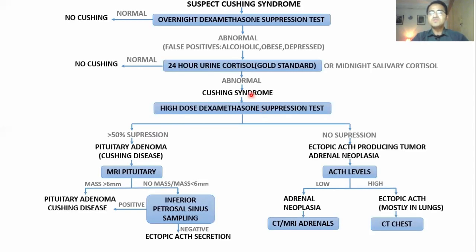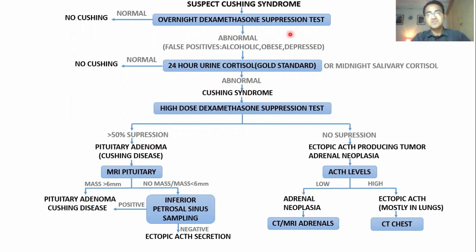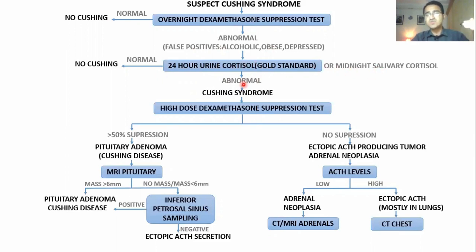In summary: whenever you suspect Cushing syndrome, first confirm the presence of excess cortisol. You go for an overnight dexamethasone suppression test — if cortisol is suppressed, no Cushing; if not suppressed, there is excess cortisol. You can also go for the gold standard 24-hour urine cortisol or midnight salivary cortisol levels. Once excess cortisol is established, you go for the high-dose dexamethasone suppression test.